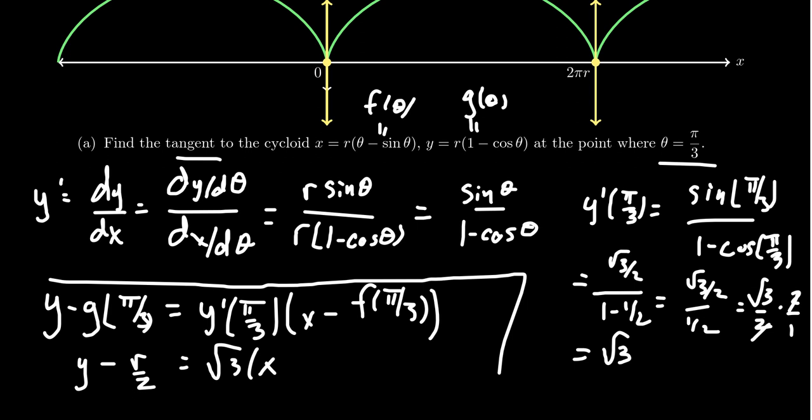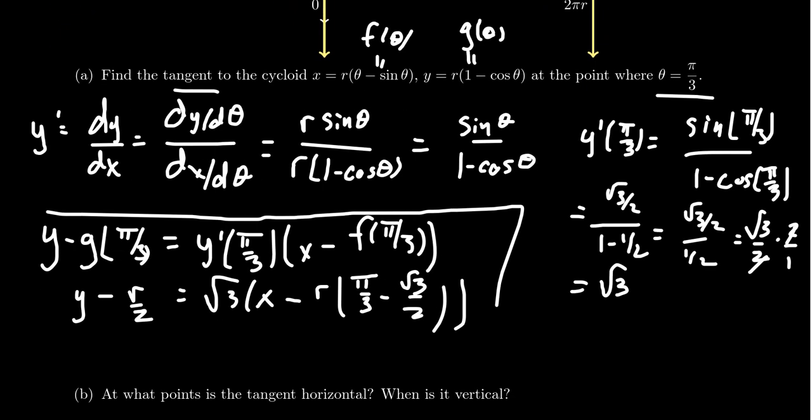And then for the x-coordinate, we put pi thirds into this guy. Sine of pi thirds is root 3 over 2, theta is pi thirds. So you get minus r times pi thirds minus root 3 over 2. That's a delicious irrational number. And this would give us the equation of the tangent line.